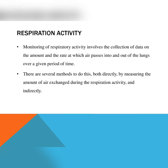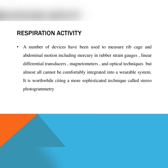Respiration activity monitoring involves collection of data on the amount and the rate at which air passes into and out of the lungs over a given period of time. There are several methods to do this, both directly — by measuring the amount of air exchanged during the respiration activity — and indirectly. A number of devices have been used to measure rib cage and abdominal motion, including mercury-in-rubber strain gauges, linear differential transducers, magnetometers, and optical techniques. However, almost all of these cannot be comfortably integrated into a wearable system.